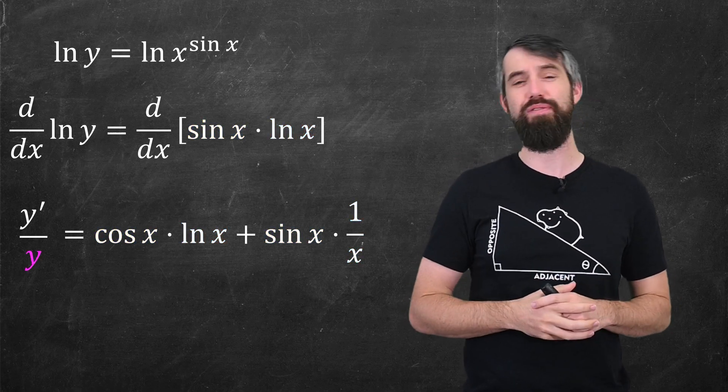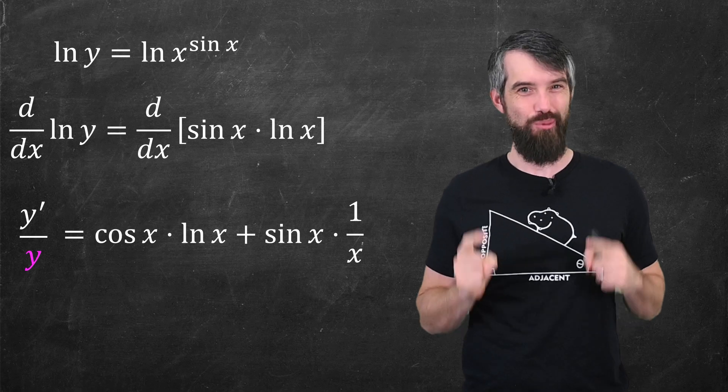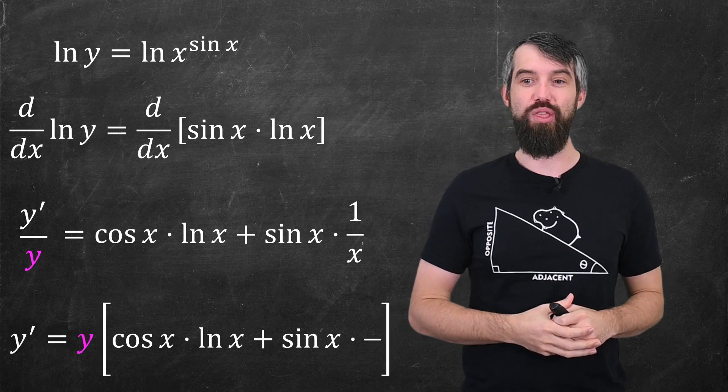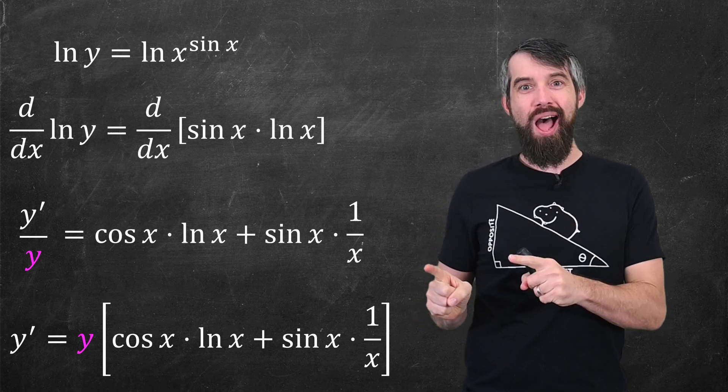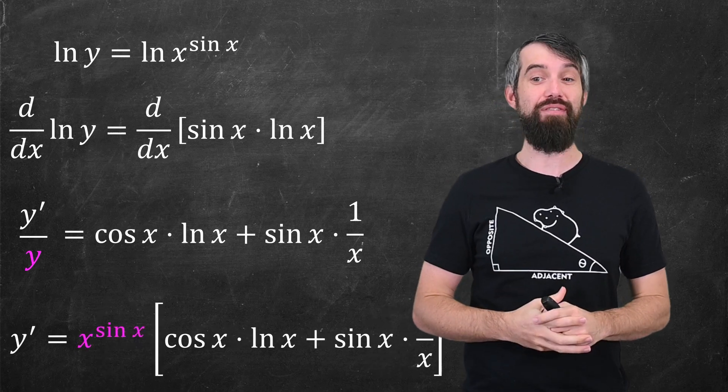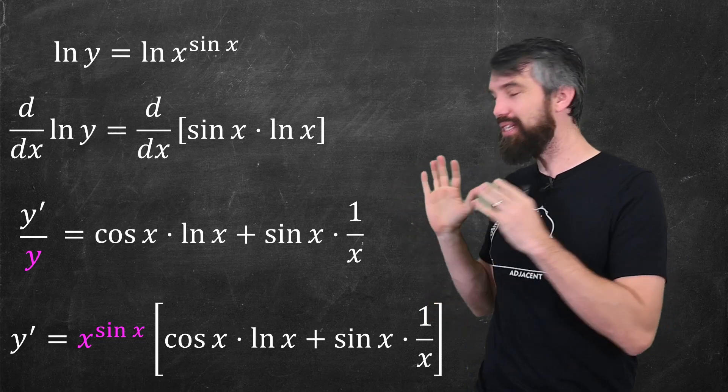I'm almost done. I noticed that it's y prime divided by y, and I was really interested in y prime, the derivative. So I'm just going to multiply the y up, it's just y times everything I've written. And remember, y was x to the sine of x, so I'll just replace that. This is my final answer.